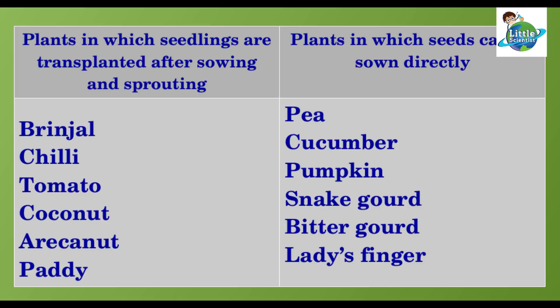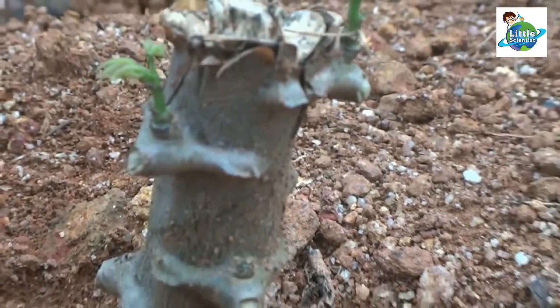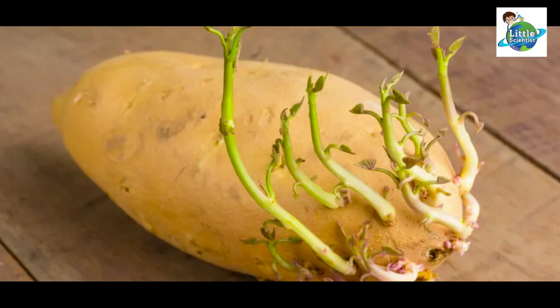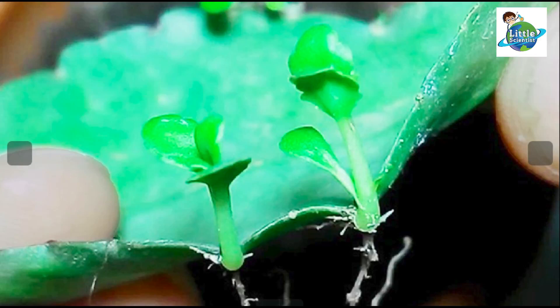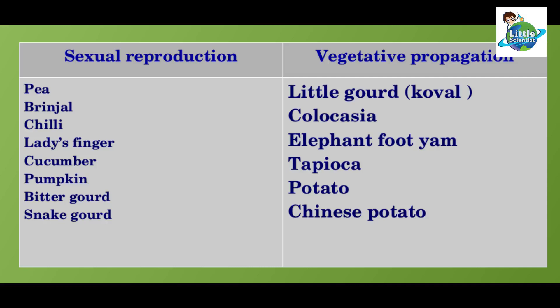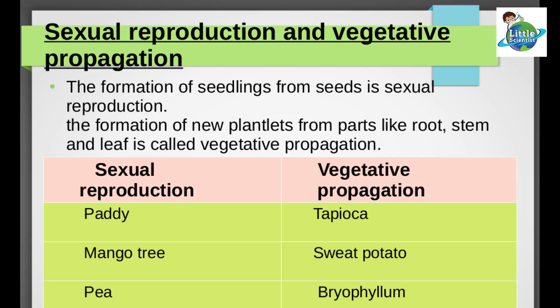Do all plants germinate from seeds? From which part does a tapioca plant sprout? And from which part does a potato plant sprout? Is there any plant that sprouts from leaves? In observation, we can conclude that there are two types of reproduction: sexual reproduction and vegetative propagation.